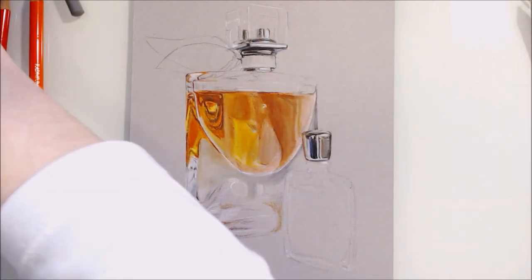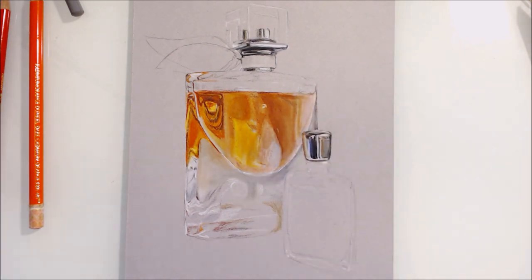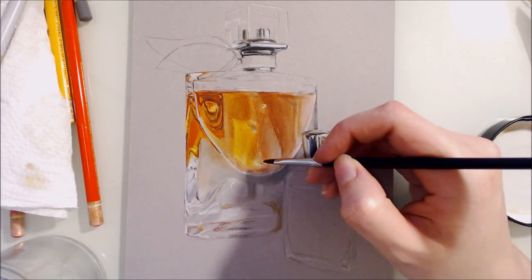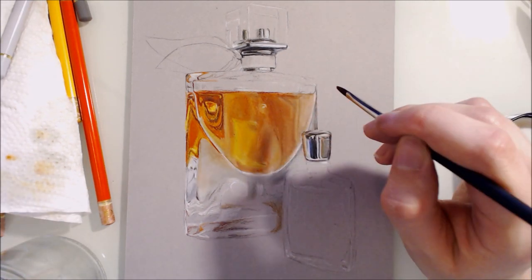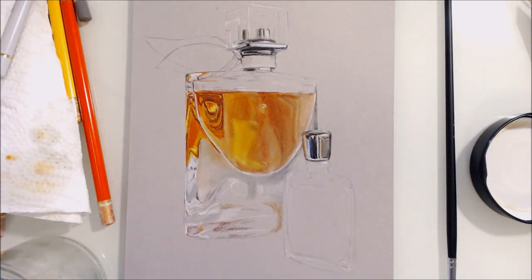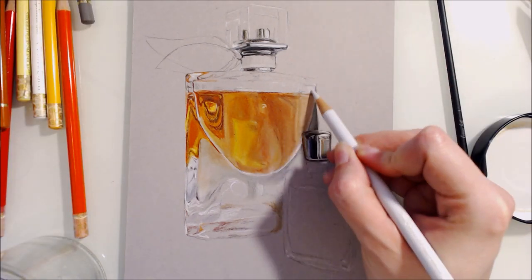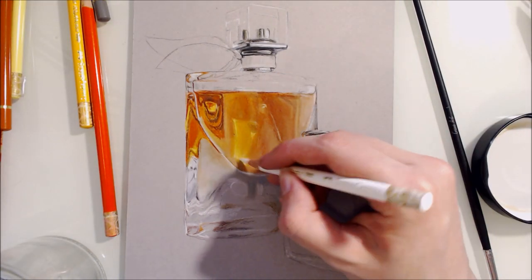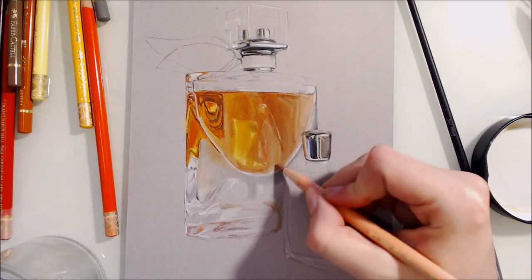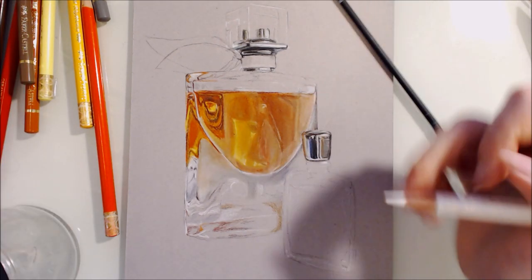With my two perfume bottles, the liquid inside is colored. And when drawing colored liquid inside glass, consider that in some areas the color of the liquid will be much darker and saturated than it is in actuality. And this is particularly true in areas where there's lots of internal reflections, such as where the liquid meets the edge of the glass or the air.